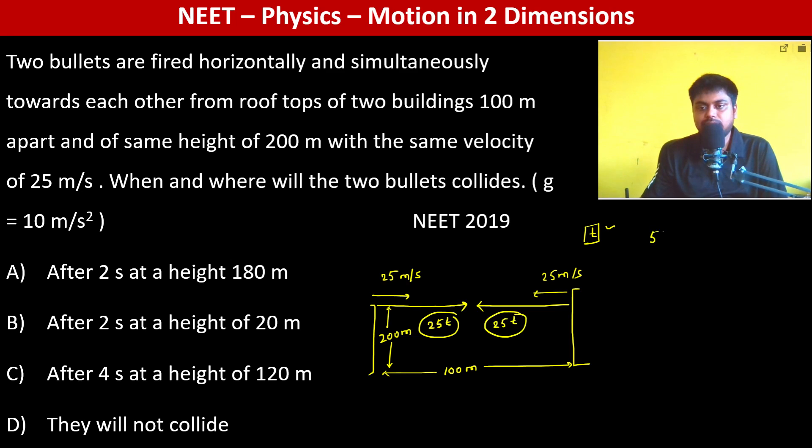Combined, they have travelled 50t, which should equal 100 meters. 50t is 50 meters per second times t. Therefore, t equals 100 meters divided by 50 meters per second. So the time taken is two seconds. They are going to collide after two seconds. And where? Now, in two seconds...